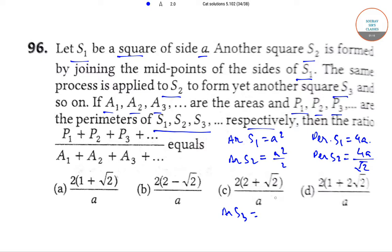Area S3 is equal to A squared by 4 and perimeter S3 is equal to 4A by root 2 squared.